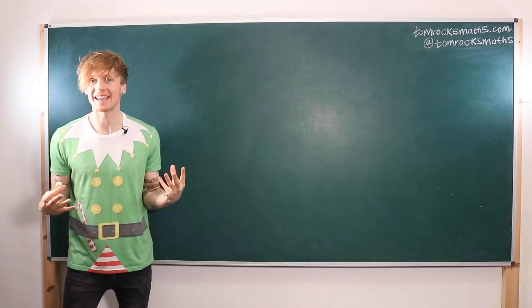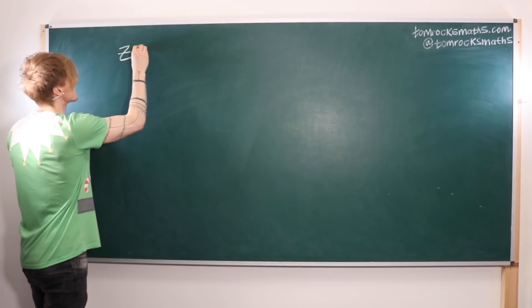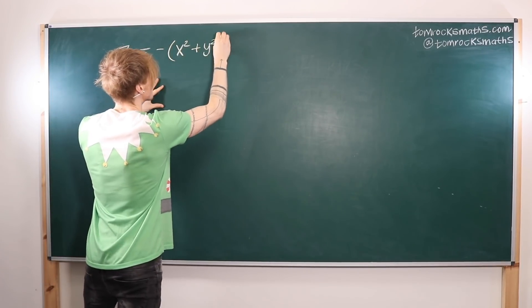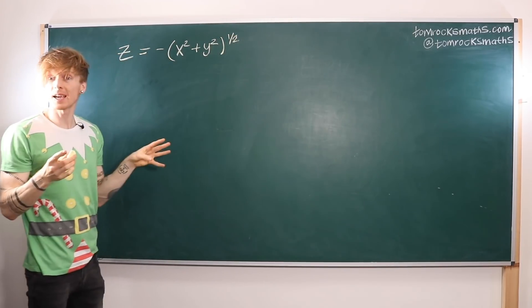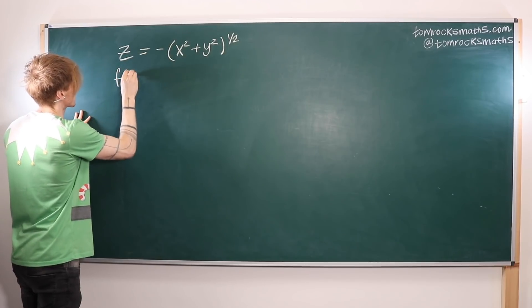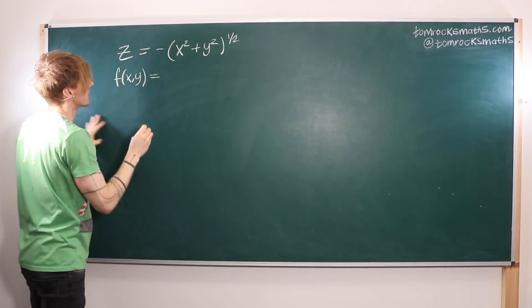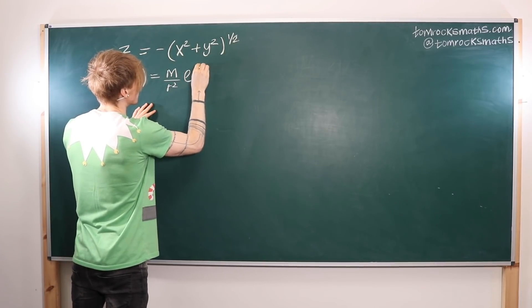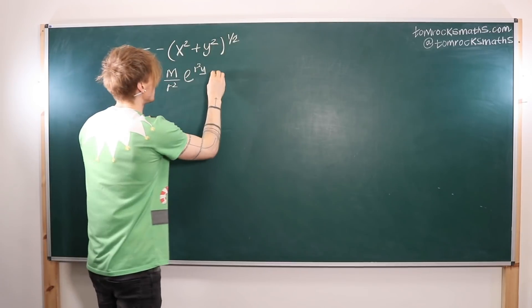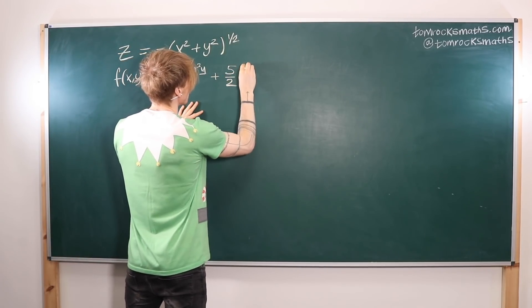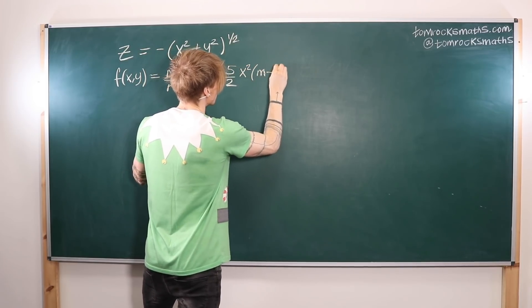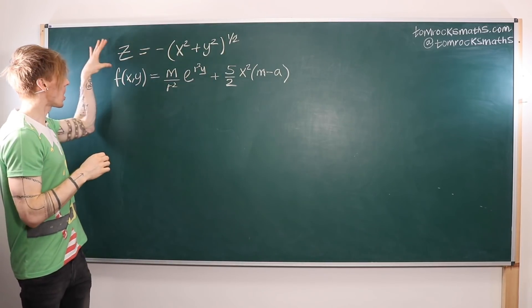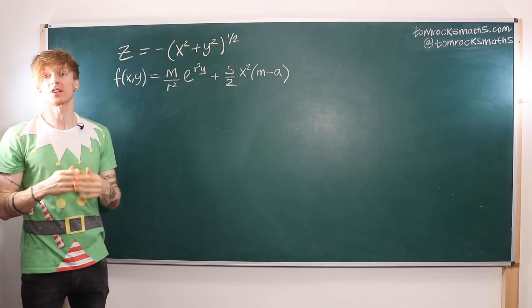There are two functions that we're going to be investigating. The first one is given by z equals minus (x² + y²)^(1/2). And the second function is going to be f(x,y) = (m/r²)e^(r²y) + (5/2)x²(m - a). Our starting point is to try to plot the 3D graph of this first function.